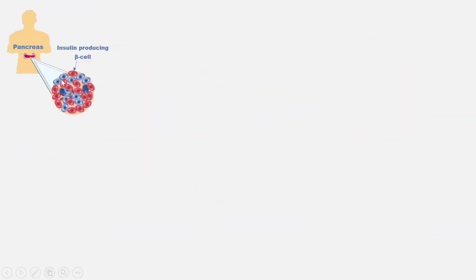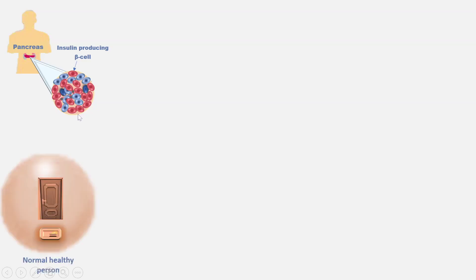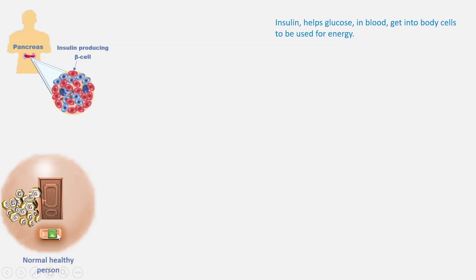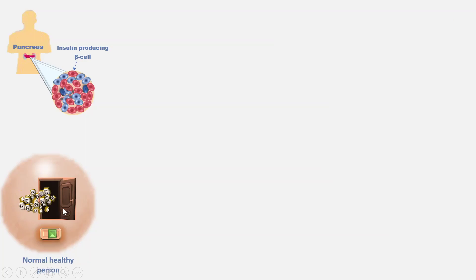These are insulin-producing beta cells inside the pancreas, and this is a hypothetical body cell. Body cells in the liver, muscles, and fat cells have insulin receptors. After a meal, glucose enters the blood and the pancreas makes insulin. Insulin binds to the insulin receptor and acts as a key that unlocks this door. The door opens up and glucose enters inside the cell, where the cell utilizes it as energy.